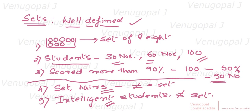A few more examples: flowers in a garden — you cannot define the number of flowers; there are humongous numbers, so that is not a set. Mosquitoes in a room — undefined, not well-defined, so not a set. To sum up: well-defined things like eight eggs, students in a class, or students who scored more than 90 percent are sets. Undefined or abstract things like hairs or 'intelligent students' are not sets.